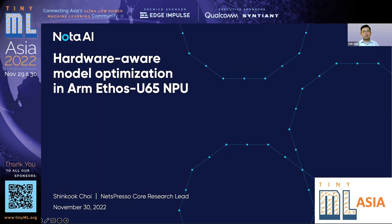After that, he researched variable applications using deep learning from the institutes, especially for speech-emotion recognition, text of speech, and speech conversions. His research interest is to improve the performance of hardware-aware AI model optimization technology in various areas such as image classification, object detection, and super resolution. Let's welcome Chong-Kong to give a speech on hardware-aware model optimization in ESA's U65MQ.